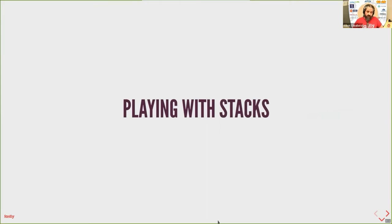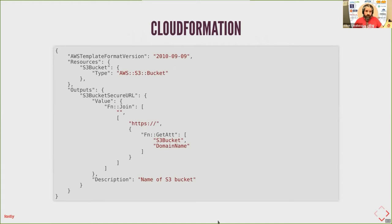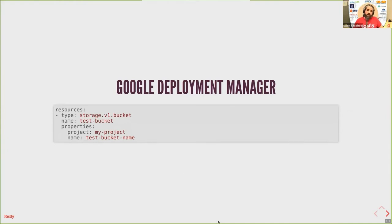AWS quickly realized this might not be ideal and released CloudFormation about ten years ago. The good thing about CloudFormation is that you define a set of connected resources declaratively. Compared to the previous script where we were saying step-by-step how to deploy, with CloudFormation you define the desired state and CloudFormation transitions your deployment into that desired state. It supports JSON and also YAML, and you can inject configuration variables.